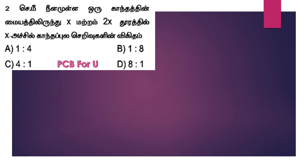In the middle of the 2cm, 1 gandha thin, x patrum 2x, x h is gandha. B is equal to mean r545 into 2m by rq.